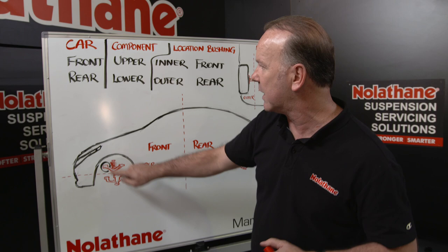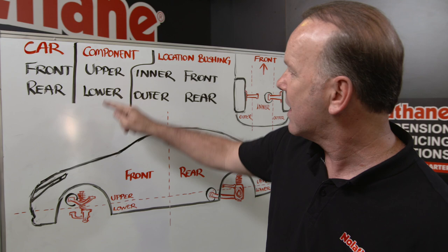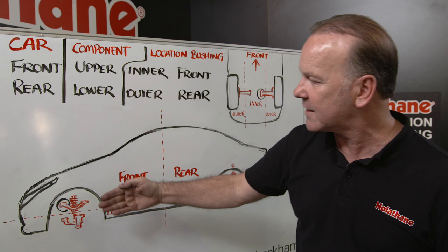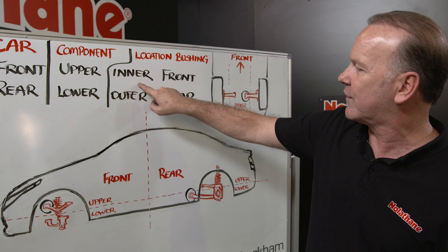Here, if we pick this component here, that's obviously front of car because we talk about the car first. Next thing we know, it's an upper. So out of the upper and lower — because they're both wishbones or control arms out of the same family — it's an upper bushing we require. Then in terms of whether it's inner or outer, well that's on the inside, you can see the A-arm. That's an inner bushing. And the location of that bushing on that component is at the front.